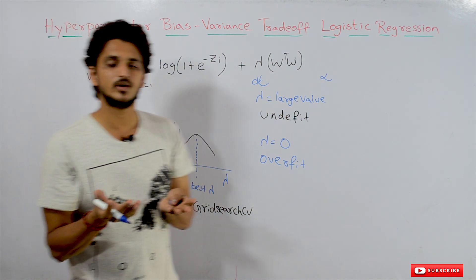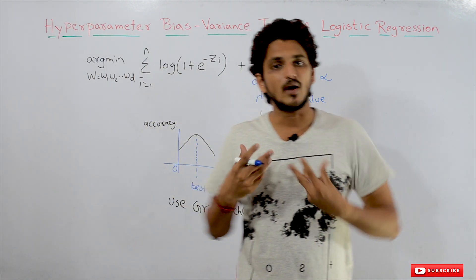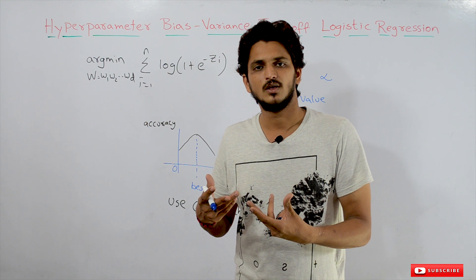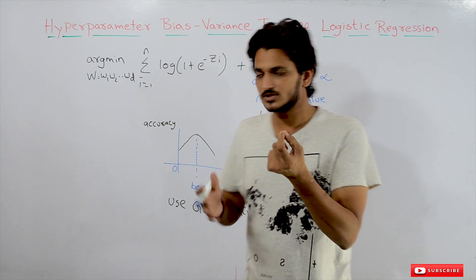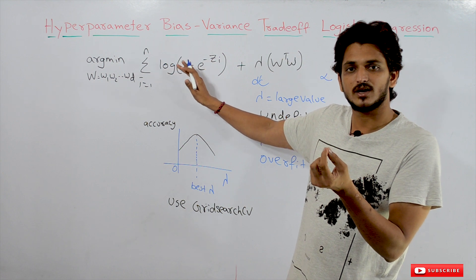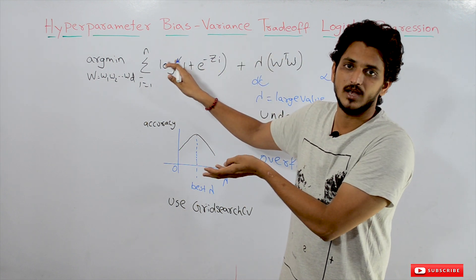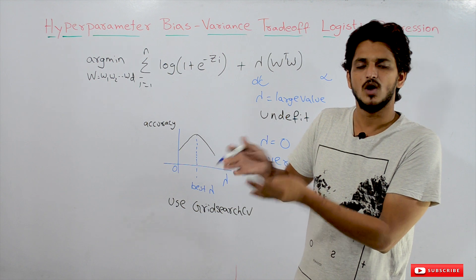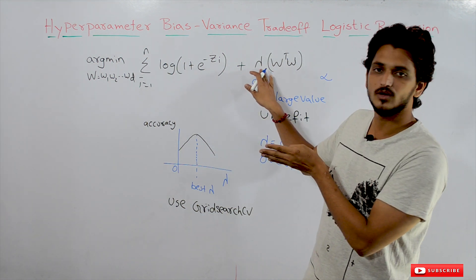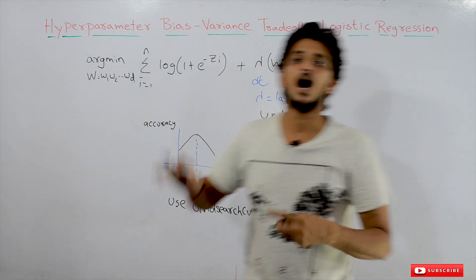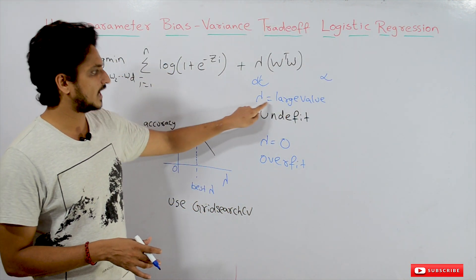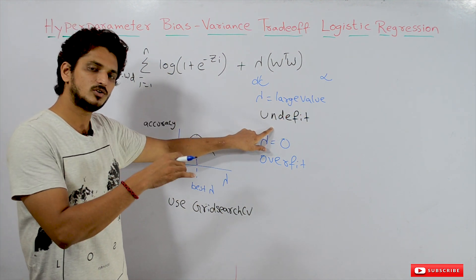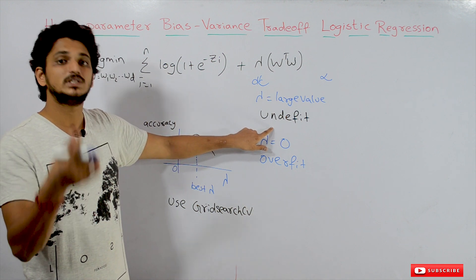Based on the loss function we should identify the right w values, but if we take a large lambda value, the loss function value is not getting considered because lambda overcomes the loss value. That's why large lambda gives under-fitted models — we are not bothering about the loss function at all, biasing entirely to the lambda value. So we need a trade-off: lambda equal to zero gives over-fitting, lambda equal to a large value gives under-fitting.